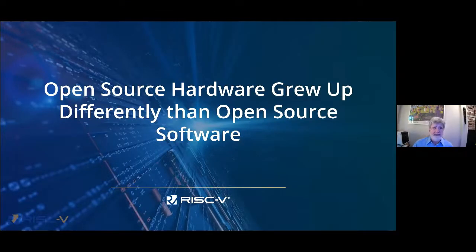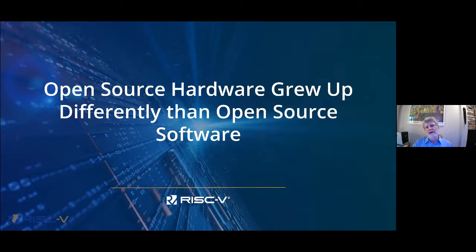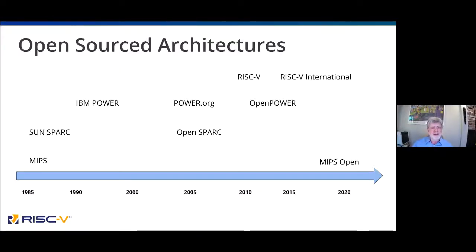Let's talk about the history of how open hardware showed up. We all know about Linux — GNU before that, then Minix, then Linux — and hardware open source evolved differently. Looking at the different architectures that showed up in the open source world, they all started as private, closed-source architectures.